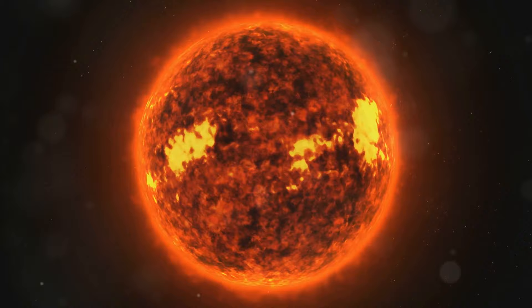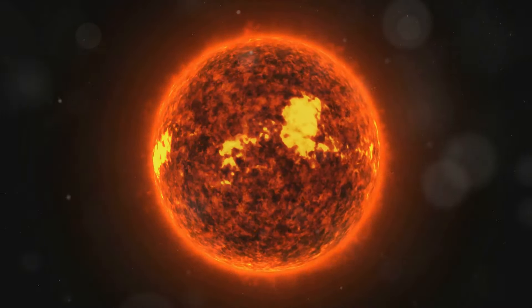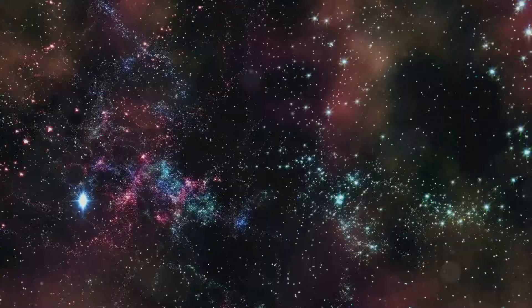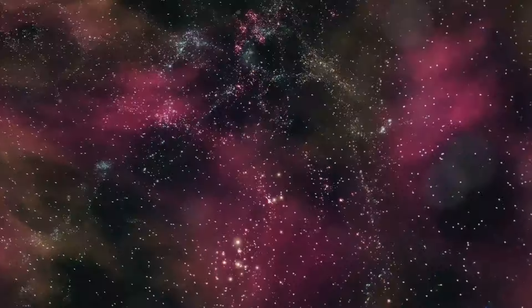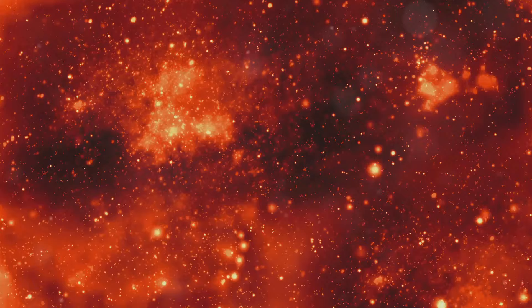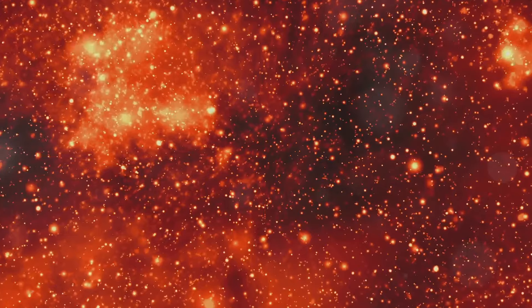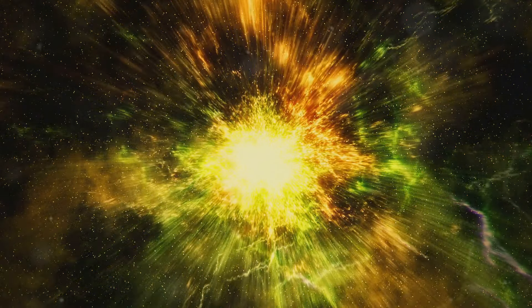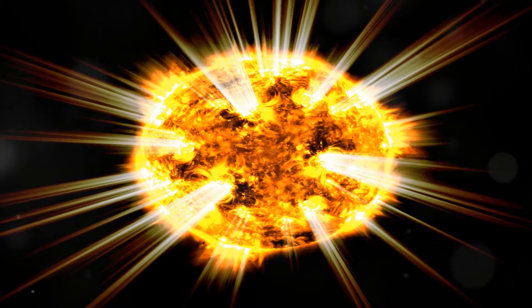Deep within the core of UY Scuti, a nuclear furnace rages, fusing hydrogen into helium at an astonishing rate. This process, known as nuclear fusion, is the engine that powers all stars, releasing the energy that makes them shine and providing the outward pressure that prevents them from collapsing under their own gravity. As UY Scuti ages, it gradually exhausts the hydrogen fuel in its core. As the core temperature and pressure increase, heavier elements such as helium, carbon and oxygen begin to fuse, releasing even more energy. These later stages of nuclear fusion are incredibly powerful, but short-lived. The eventual fate of UY Scuti, like all stars, is determined by its mass.